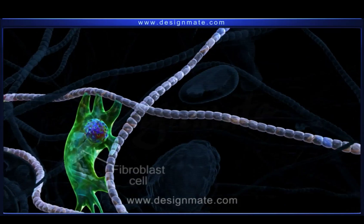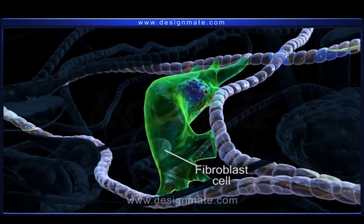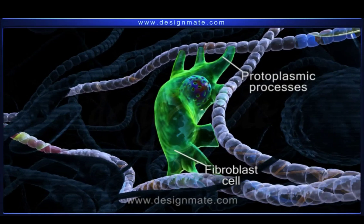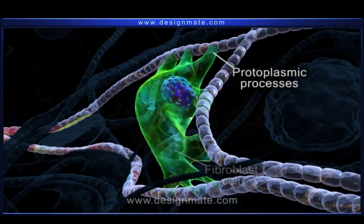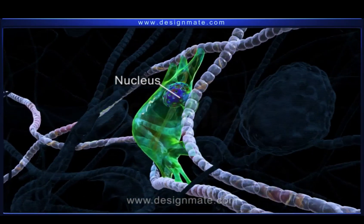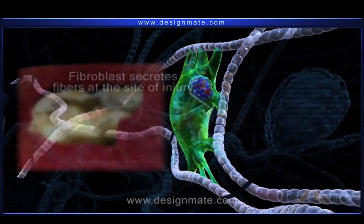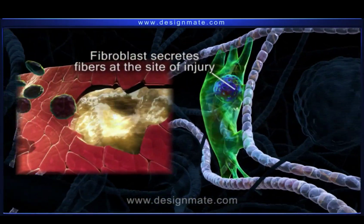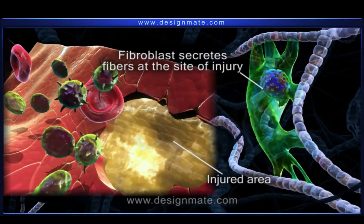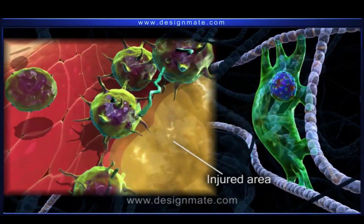It also contains flat, irregularly shaped fibroblast cells, which have long protoplasmic processes and an oval nucleus. During the tissue repair and wound healing process, the fibroblast secretes fibers at the site of the injury to effectively seal off the injured area.